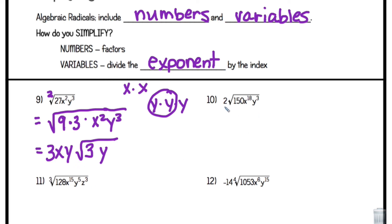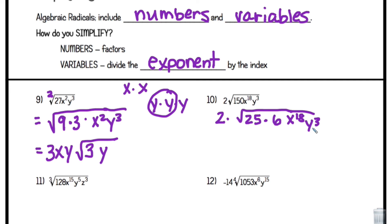Number 10 is a square root again. I have 2 times the square root of 150x¹⁸y³. The highest perfect square in 150 is 25 times 6, so a 5 comes out, giving 10 on the outside. For x to the 18th: 18 divided by 2 equals 9, so x⁹ comes out. For y³: one y comes out with y remaining inside. The answer is 10x⁹y·√(6y).